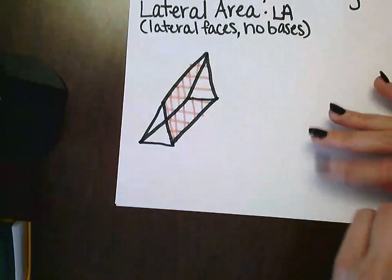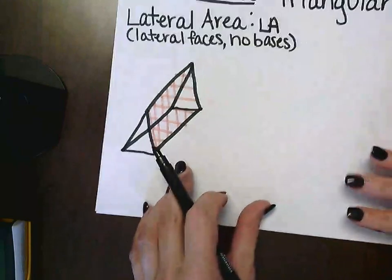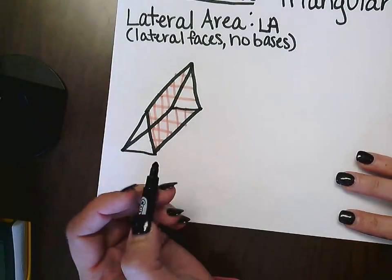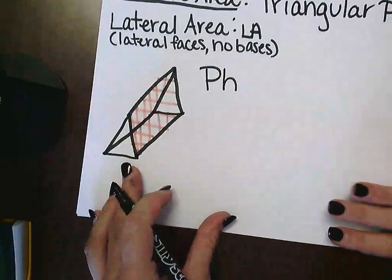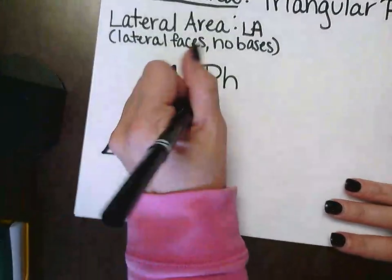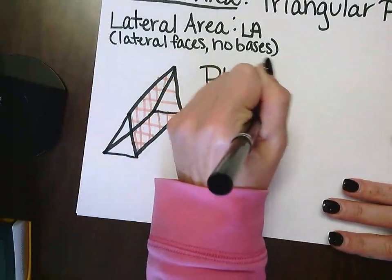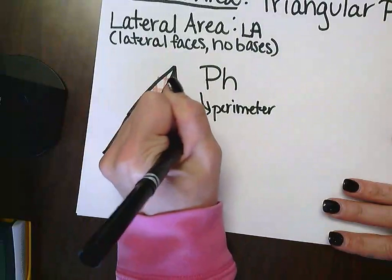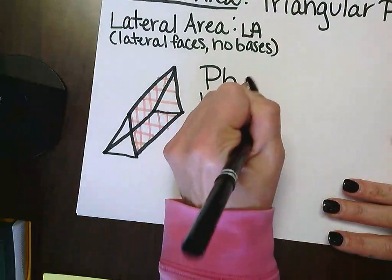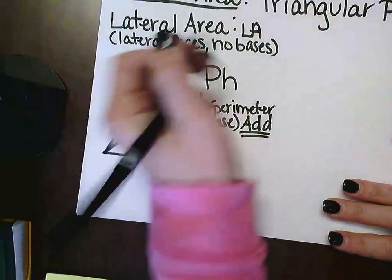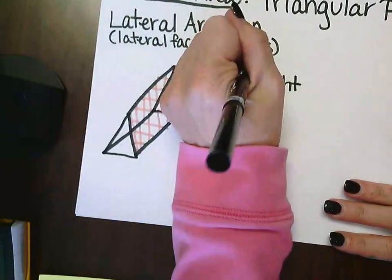The formula for solving lateral area is the same as it was for the lateral area of a rectangular prism. It's PH. P is our perimeter of base—that is my hint. And how do we find perimeter? Here we add.